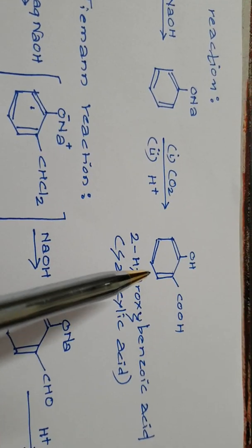Now know that in these two cases this is how you remember: Kolb's reaction for preparation of salicylic acid and Reimer-Tiemann reaction for salicylaldehyde. Let's go for the next set of reactions.